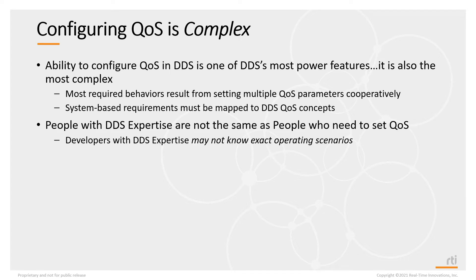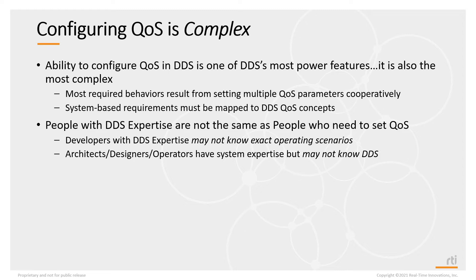As a developer, you're creating an application, programming in C, C++, Java, Python, or whatever programming language, but you may not necessarily know the exact operating scenario of those applications. On the other hand, architects, designers, and operators of the actual system have operational and system expertise, but they may not know in detail DDS and how to set QoS or even what QoS exist.